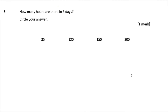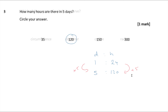Question 3 — how many hours are there in five days? We're converting days to hours. One day is the same as 24 hours, so five days, scaling up by a factor of five, gives five lots of 24, which is 120. The answer is 120.